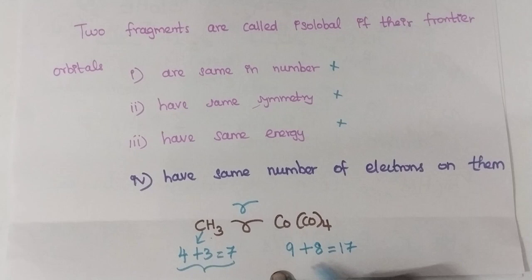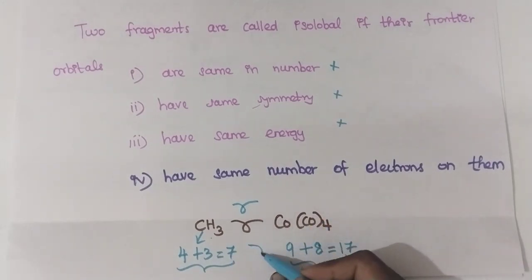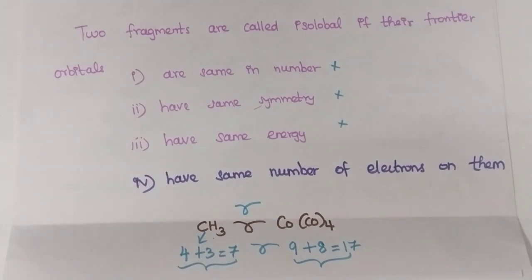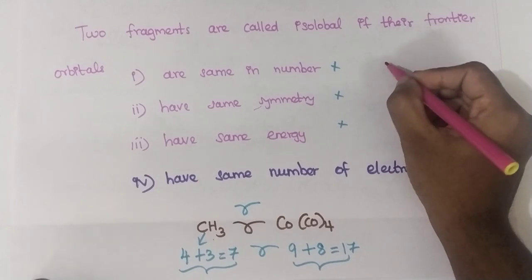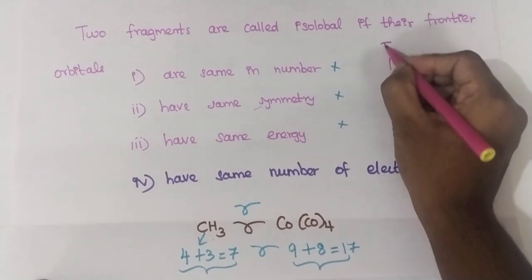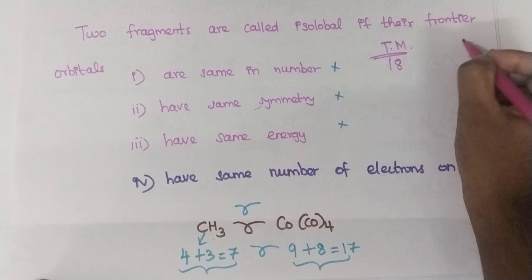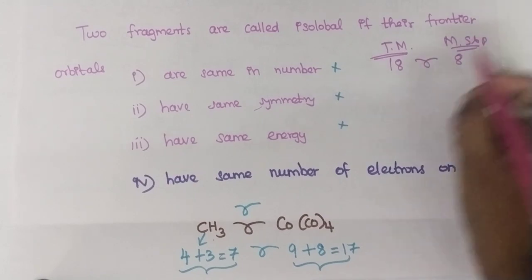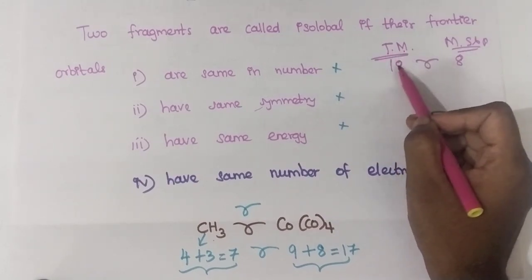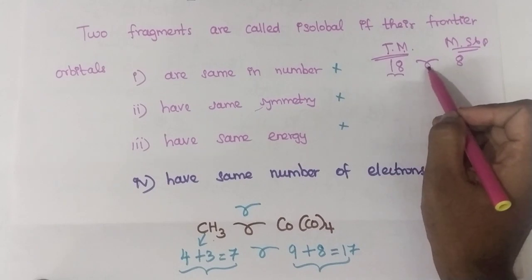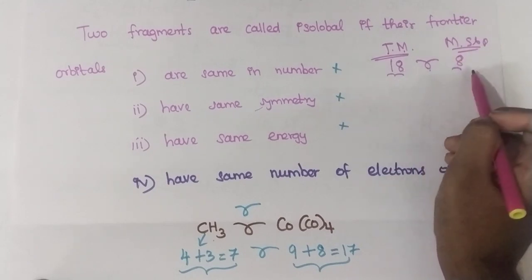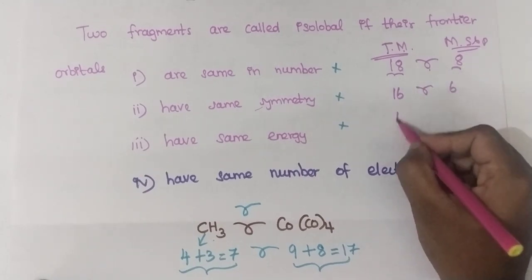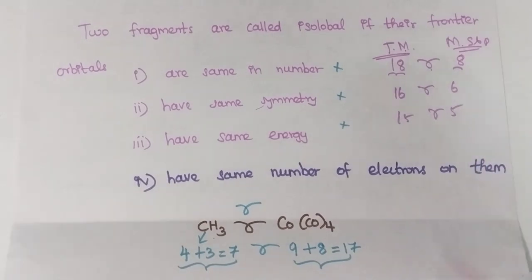So CH₃ (7 electrons) and Co(CO)₄ (17 electrons) are isolobal with each other. The rule is: an 18-electron transition metal fragment is isolobal with an 8-electron main group fragment. Similarly, 17 electrons is isolobal with 7; 16 electrons is isolobal with 6; and 15 electrons is isolobal with 5.